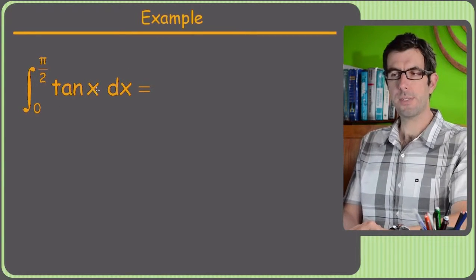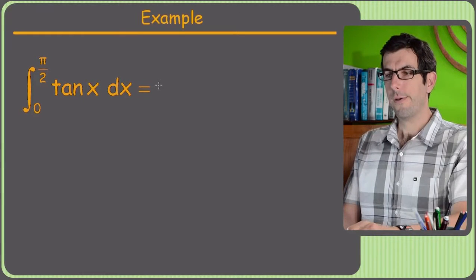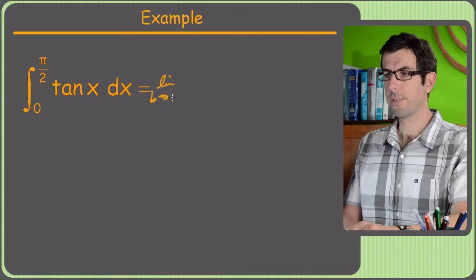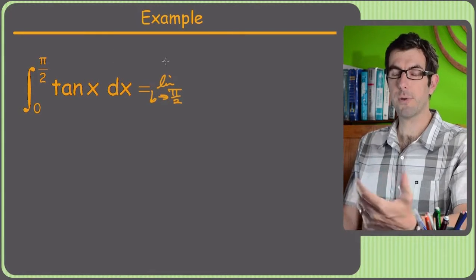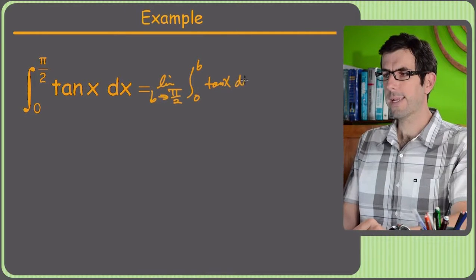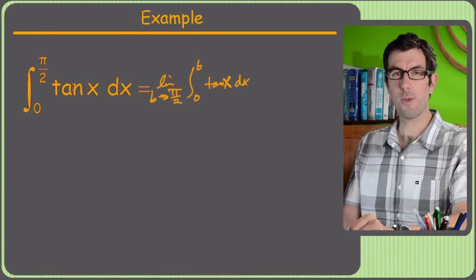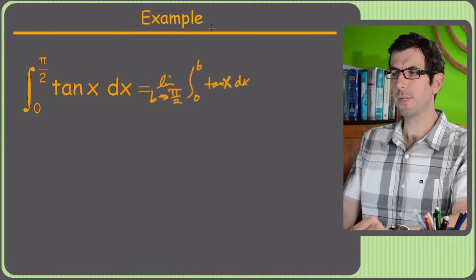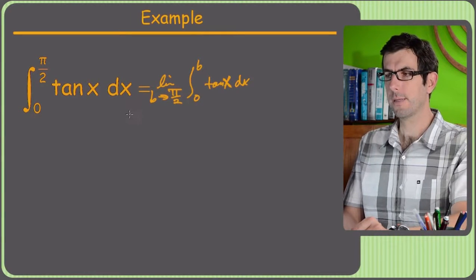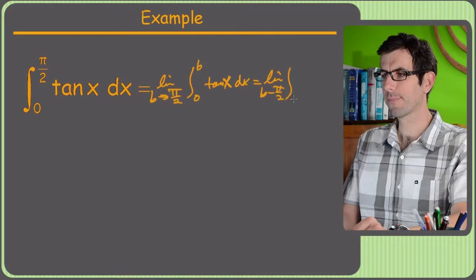What's the problem with this one? Tangent of zero is fine, but tangent of pi over two is undefined — that's why it's an improper integral. It's also a hard integral. So: limit — this is our upper limit that's a problem — as b approaches pi over two. This one's hard enough that you probably wouldn't have to do one with tangents unless you're in a pretty hard class. So: the integral from zero to b of tan x.